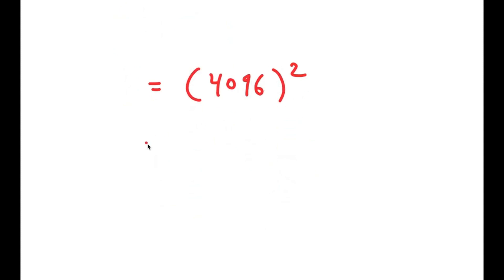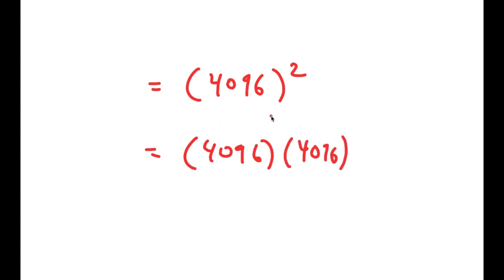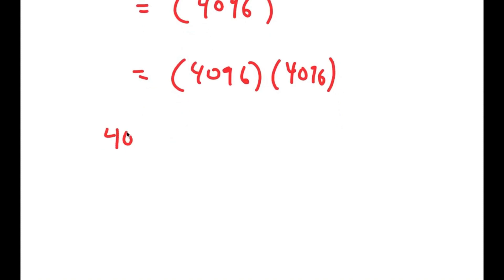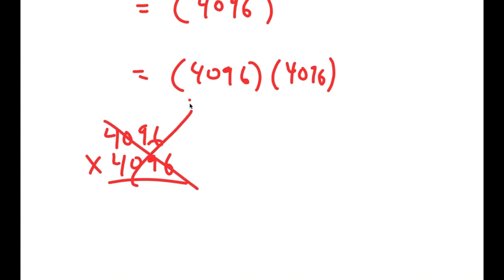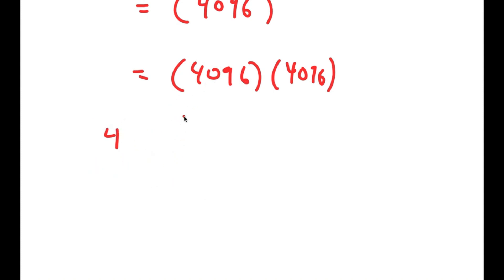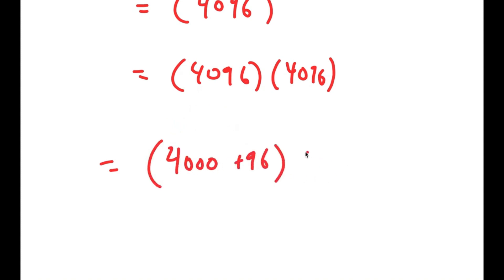Now, 4,096 squared is the same thing as 4,096 times 4,096. What most people would do is multiply this using the conventional method, however this takes way too long and it's really easy to make an error. So instead, to more easily solve this, I'm going to write this as 4,000 plus 96, times 4,000 plus 96.